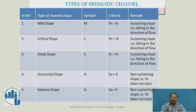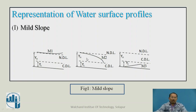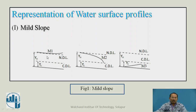The entire region of the channel is divided into three zones. Zone 1 refers to the region above the uppermost line (NDL). Zone 2 is between the NDL and CDL. Zone 3 is between the CDL and the channel bottom. For mild slope, when Y is above the NDL, Y > Yn > Yc, giving an M1 type profile.